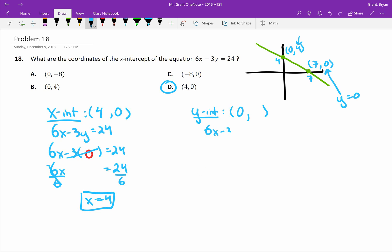So we'd do the same thing, 6x minus 3y equal to 24, but we would replace x with 0 instead of y, and then get y alone.